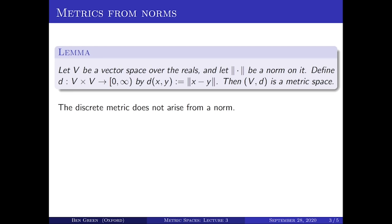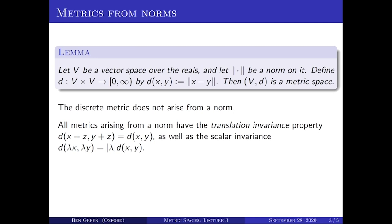It is not the case that all metrics arise from this construction — certainly not. Apart from in highly unusual cases, the discrete metric does not arise from a norm. All metrics arising from a norm have some additional properties: translation invariance — the distance from X plus Z to Y plus Z is the same as the distance from X to Y — and scalar invariance — the distance from lambda X to lambda Y is the absolute value of lambda times the distance from X to Y. This second property would preclude the discrete metric from arising from a norm, because if the distance between X and Y is one in the discrete metric, the distance between 2X and 2Y can't also be one, as it would have to be.